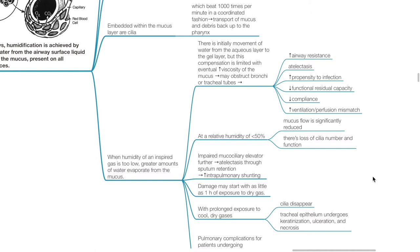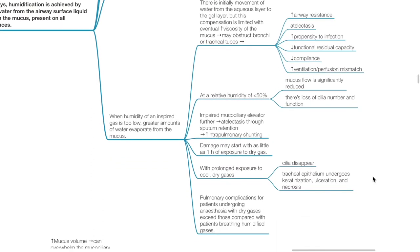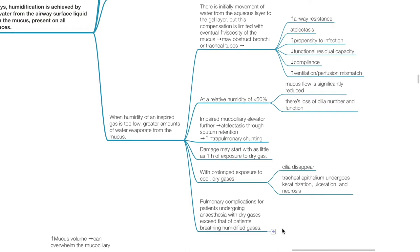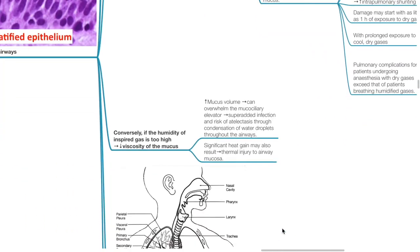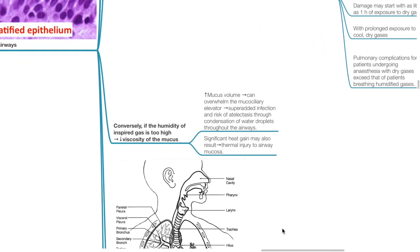Damage may start with as little as one hour of exposure to dry gas. With prolonged exposure to cool dry gases, cilia disappear and tracheoepithelium undergoes keratinization, ulceration and necrosis. Pulmonary complications for patients undergoing anesthesia with dry gases exceed that of patients breathing humidified gases. Conversely, if the humidity of inspired gas is too high, there is reduction of viscosity of the mucus. This results in increased mucus volume which can overwhelm the mucociliary elevator. Super-added infection and risk of atelectasis occurs through condensation of water droplets throughout the airways. Significant heat gain may also occur and may result in thermal injury to airway mucosa.